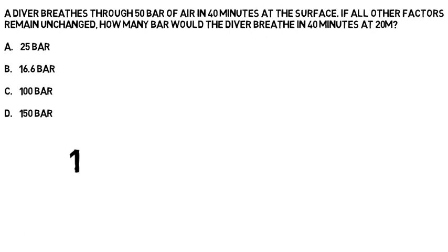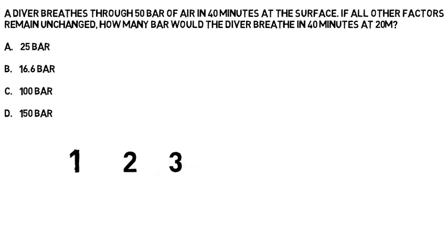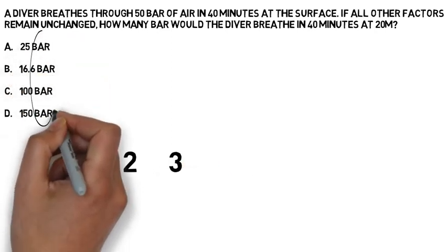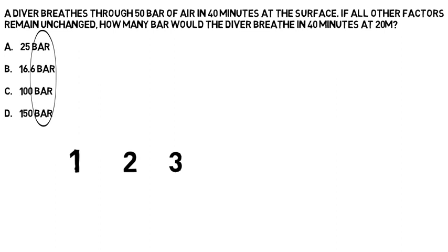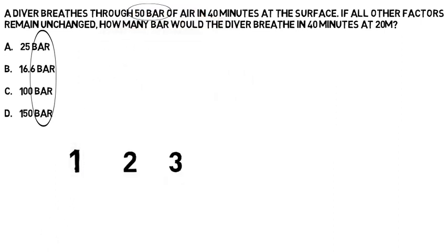In step 1, we look at our answers for the unit of measurement. We can see that the answers are all in bar, so we need to then look at our question and find out what starting point we've been given. And when we find the bar there, we find it's 50 bar. That means that we write 50 in step 1.